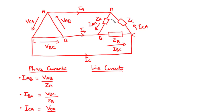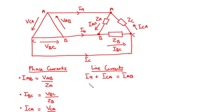For the line current we are going to apply KCL at each of the nodes at the load. To find the value of Ia, current Ia and current Ica both approach this node, whereas Iab is leaving the node. So we can say that Ia plus Ica equals Iab, and therefore Ia equals Iab minus Ica.